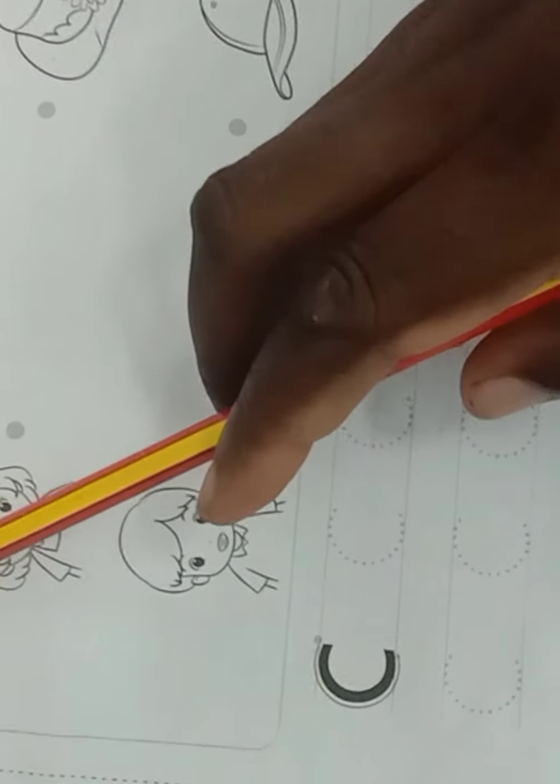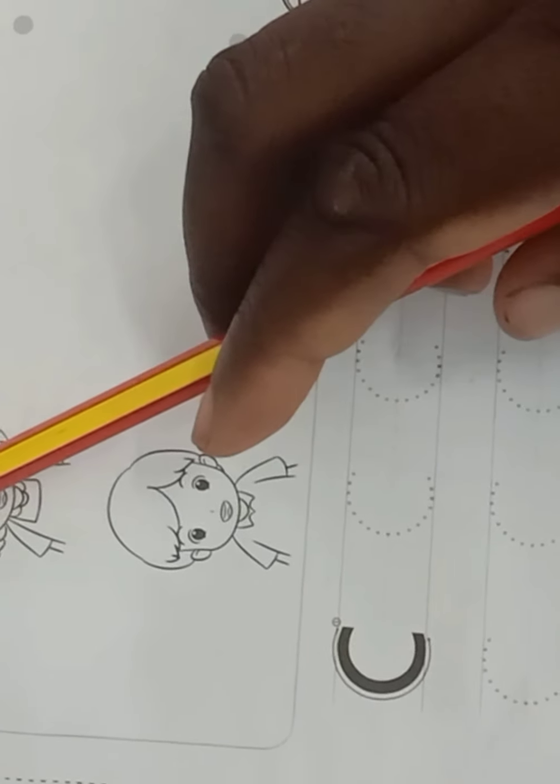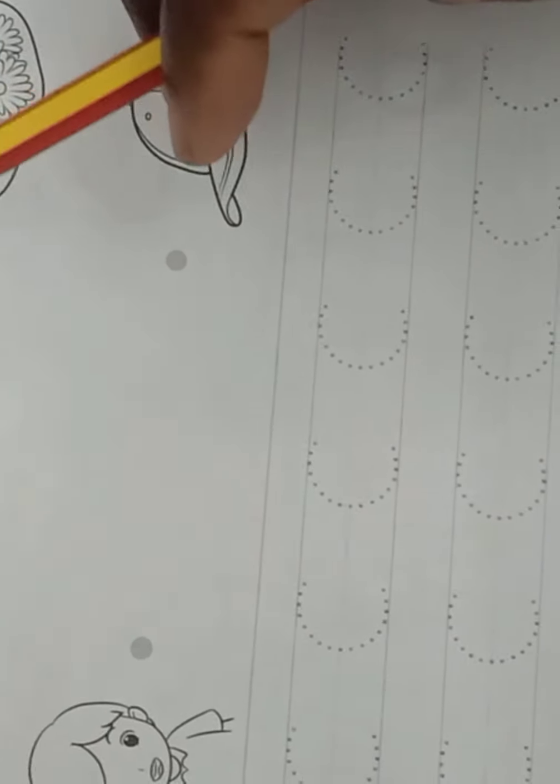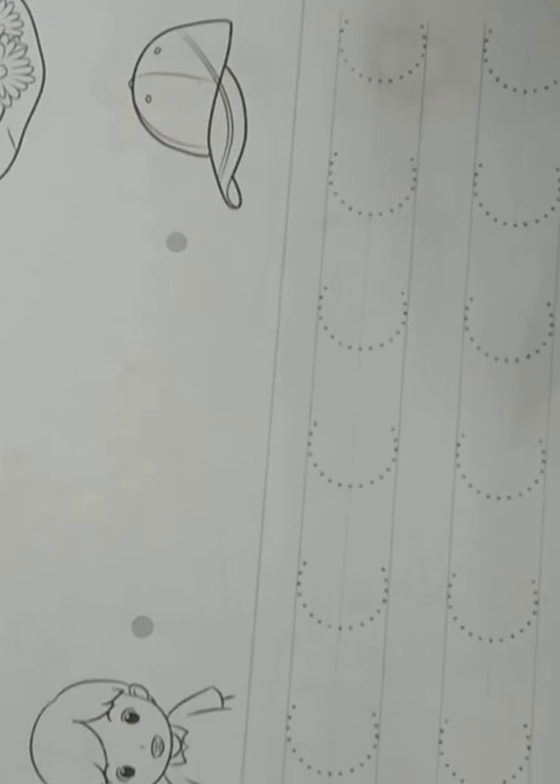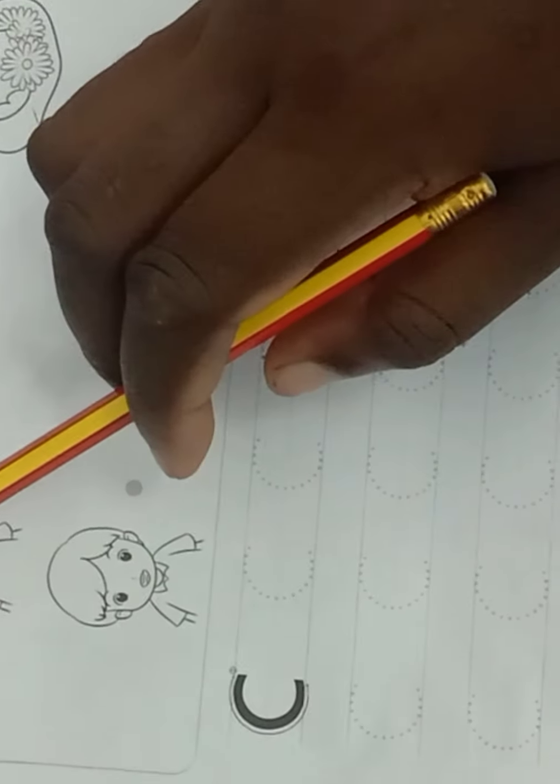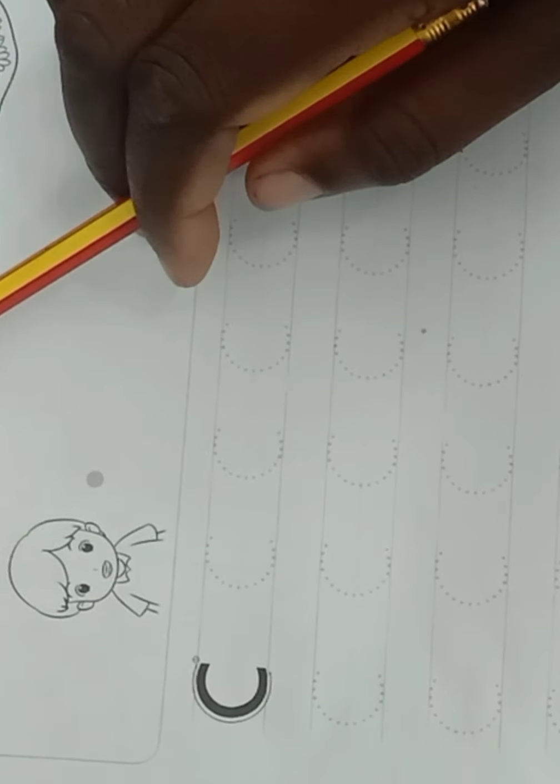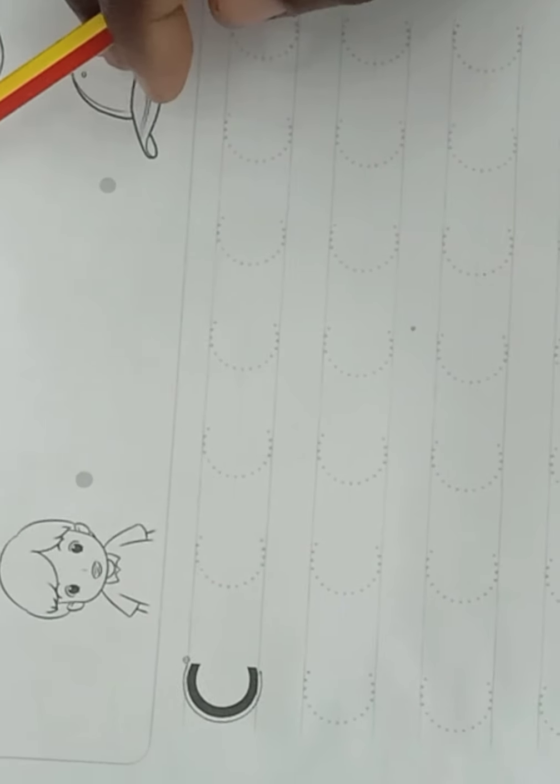Look at this. Cat, cat. Cup, cup. Can, can. Okay, repeat after the teacher. Cat, cup, can. Very good.